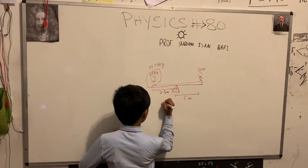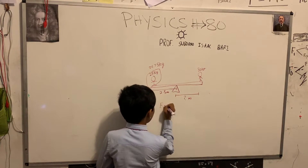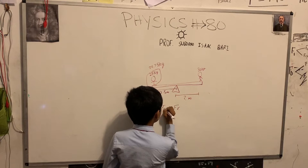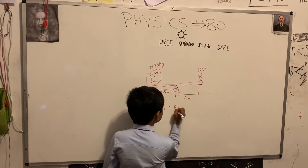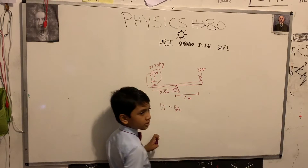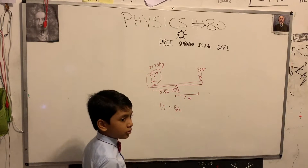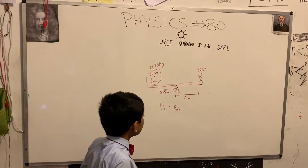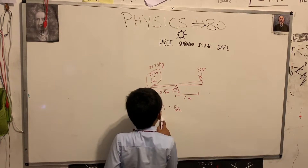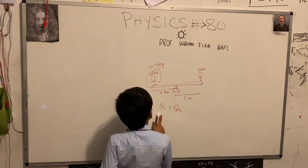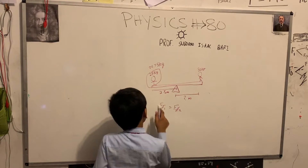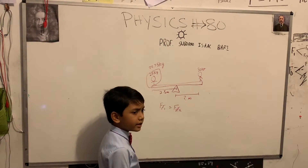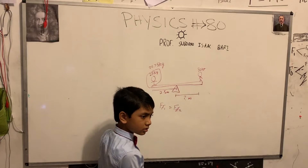Torque is always F times R, so F1·R1 equals F2·R2. Because we want net torque to be zero, F1·R1 is going to be... F1 will be the weight — so 25 times 10.